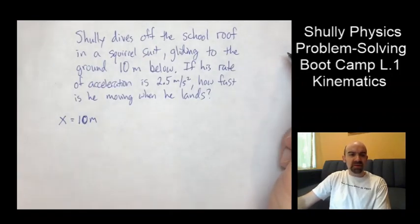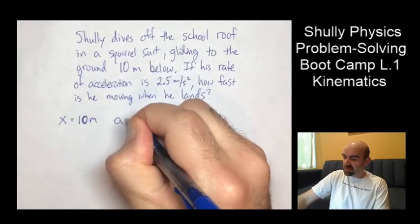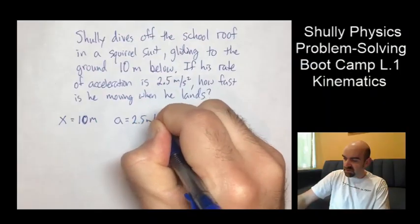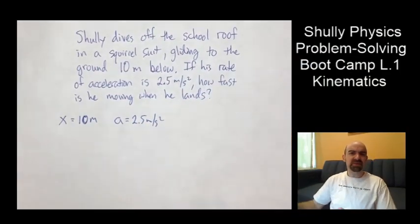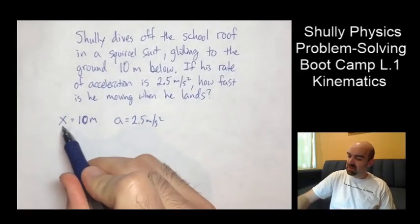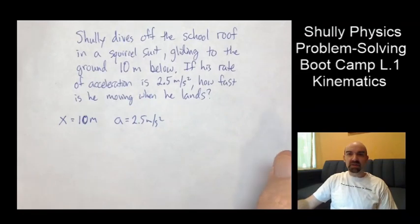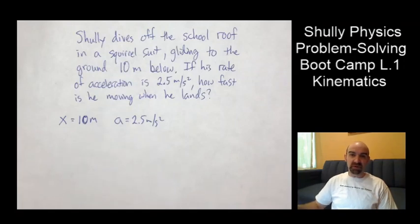Then it gives my rate of acceleration is 2.5 meters per second squared. So in writing it down, I'm not just writing down the numbers. I'm labeling them. What is the quantity? This is the X. This is the A. It's going to make this so much easier later on. I'm going to be able to put away all the words in a moment and only look at what I've written down.